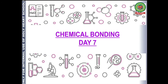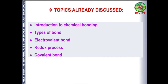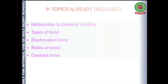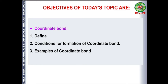Good morning students, welcome to your chemistry class. Let us further discuss the chapter chemical bonding. The topics we have already discussed are introduction, types of bond, electrovalent bond, redox process, and covalent bond. The topic of our discussion for today will be coordinate bond, including its definition, conditions for its formation.